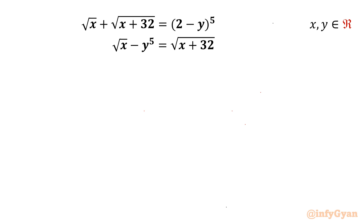Welcome back to Infigyan friends. Today in this video we are going to take up one very interesting and ultimate system of equations. The equations are: square root x plus square root of x plus 32, equal to 2 minus y raised to the power 5. And the second equation is square root x minus y power 5, equal to square root of x plus 32. We have to find out real solutions.